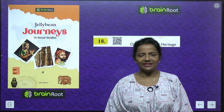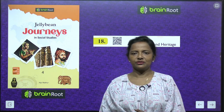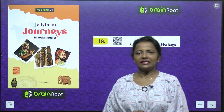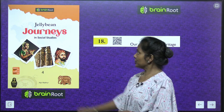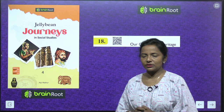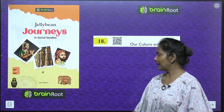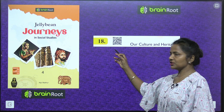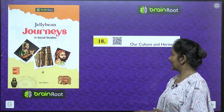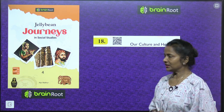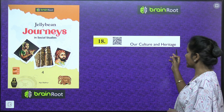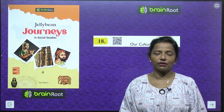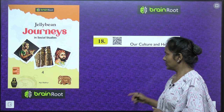Hello learners, how are you all? A very warm welcome to your social studies class with your mentor Aparajita. Let's start the book Jelly Bean Journeys in Social Studies, Class 4th by Brain Root series. Today we are going to do chapter number 18, which is the last chapter of our book — Our Culture and Heritage. So today we will study about India's culture and heritage.